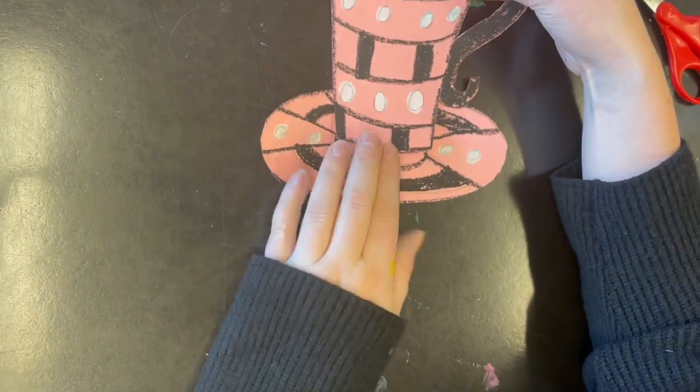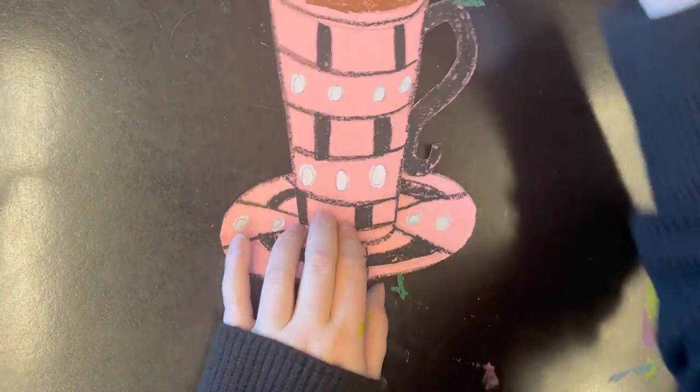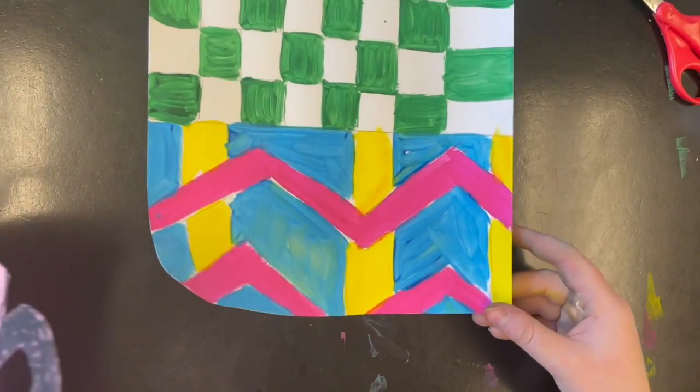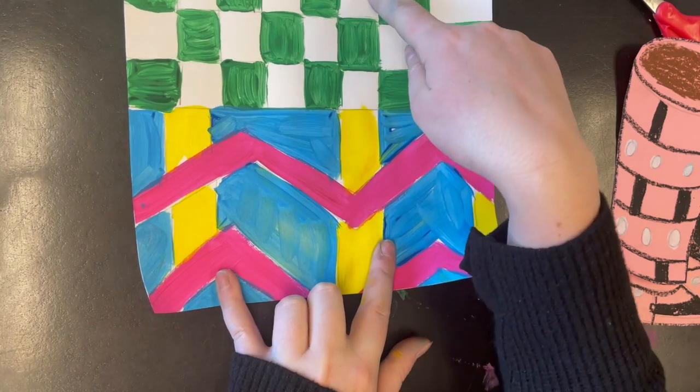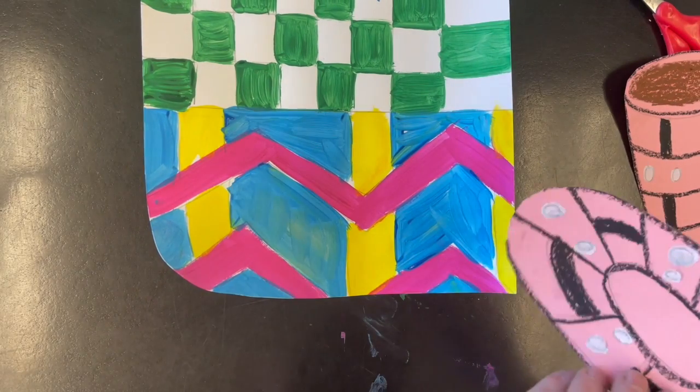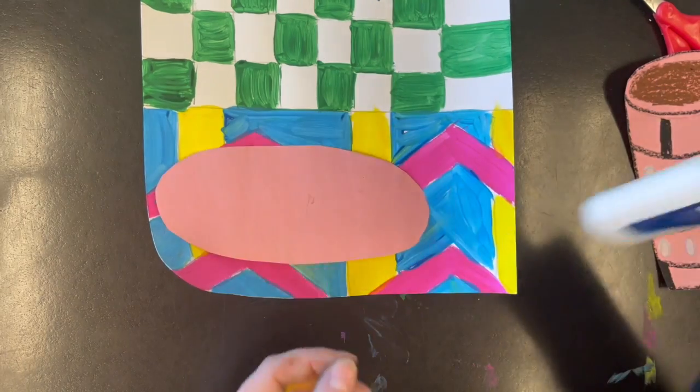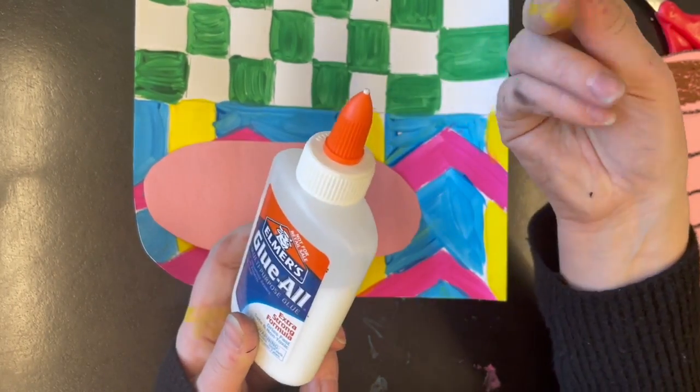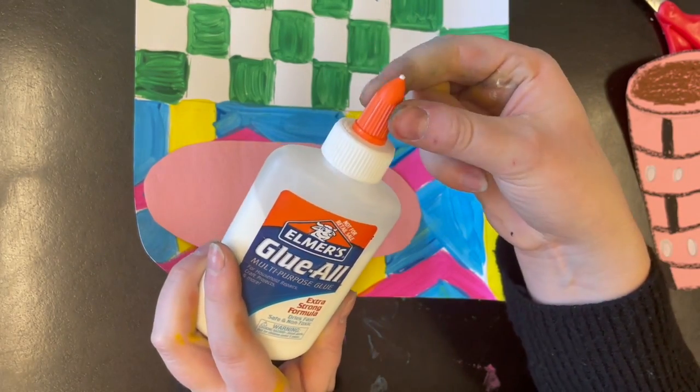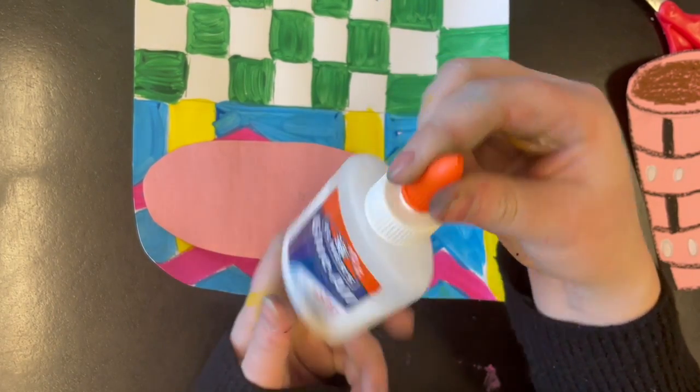Now I have my mug and saucer and I'm going to glue them onto my background. Remember, one part of the pattern is supposed to be the table and one pattern is supposed to be the wall. I'm going to use my glue—I might have to get some of the crusty dry bits off the top. Twist the orange part to open it.